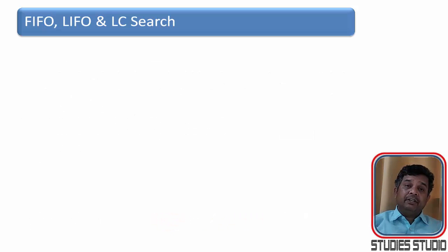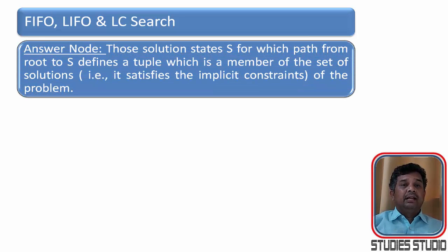In our previous video we have seen few terms that we use generally in FIFO, LIFO and LC search branch and bound methods. So, let us refresh them. First one is answer node. Those solutions of the state S, for which the path from the root to S define a tuple, which is a member of a set of solution of the problem. It means if for a tree, a particular node is a solution, then from root to that particular node, the path will say as answer node.